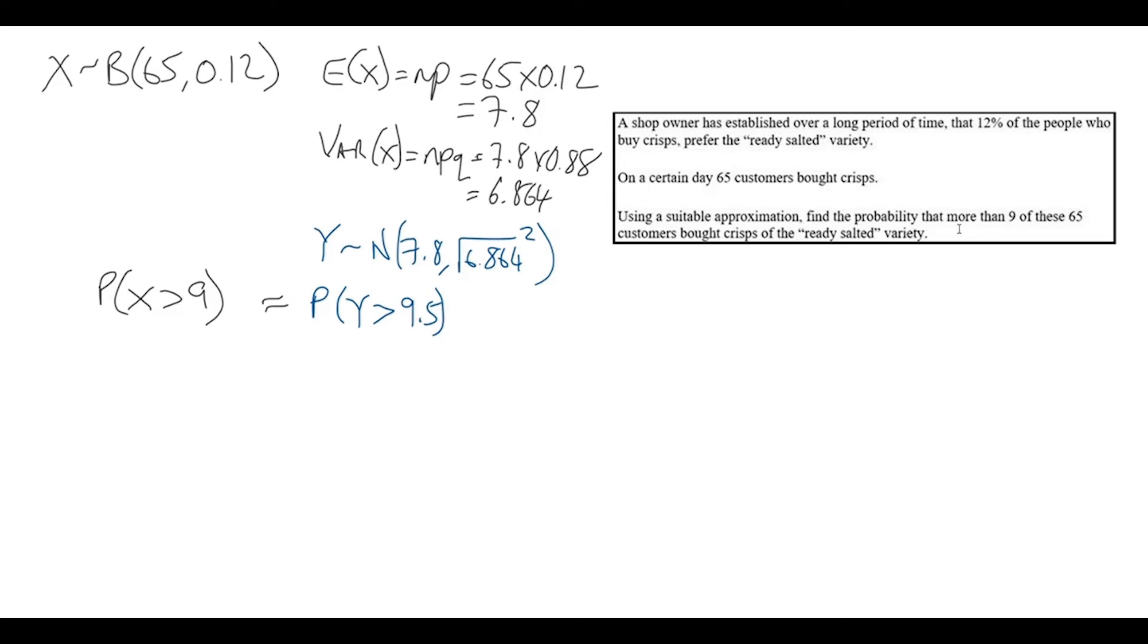We wanted to make sure we didn't include 9, which means we'll start from 9.5 and go above. So in our calculators this is going to be an NCD calculation. The minimum value we're interested in is 9.5, we'll go up to a massively large number, 10,000.